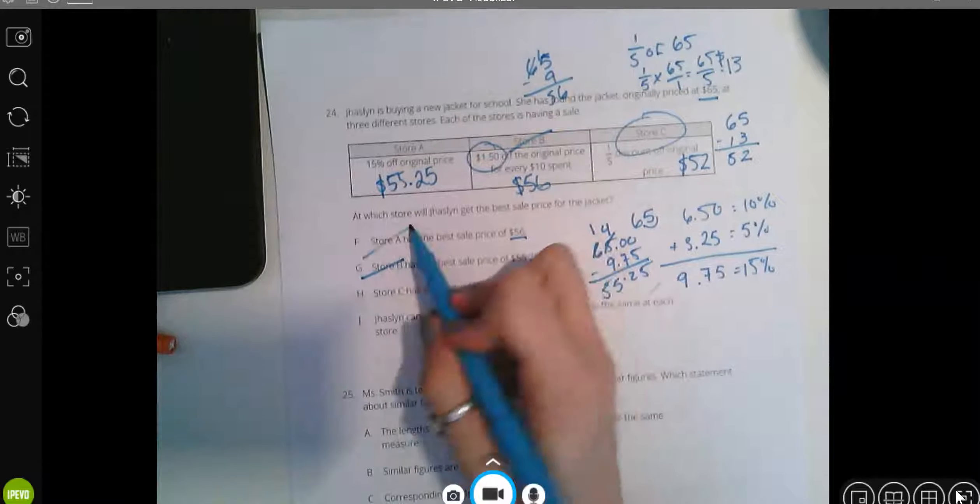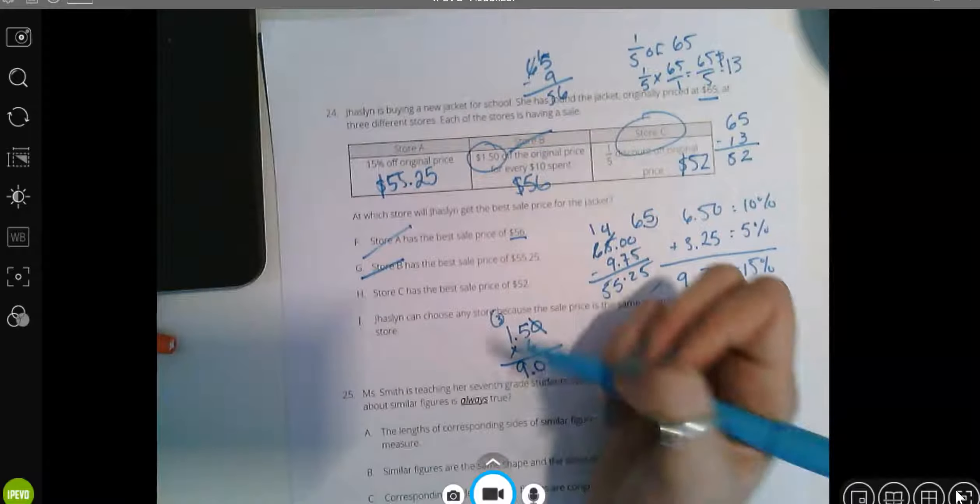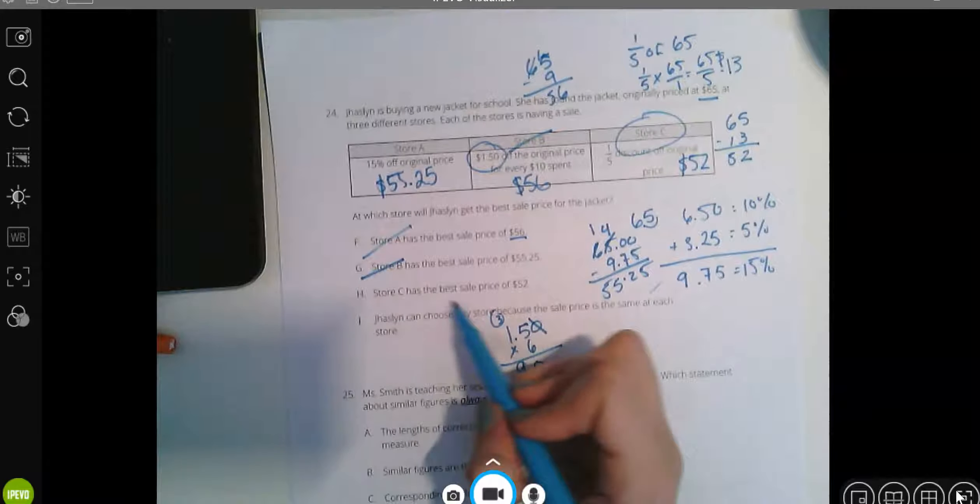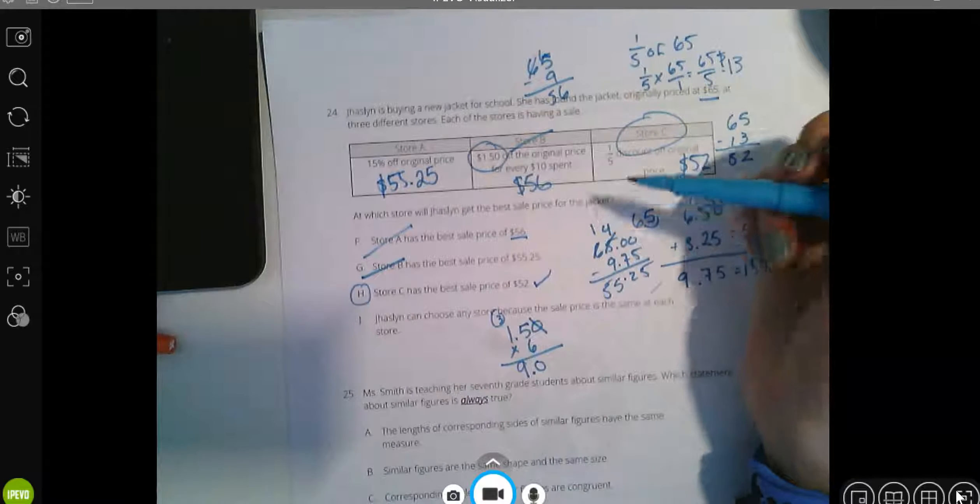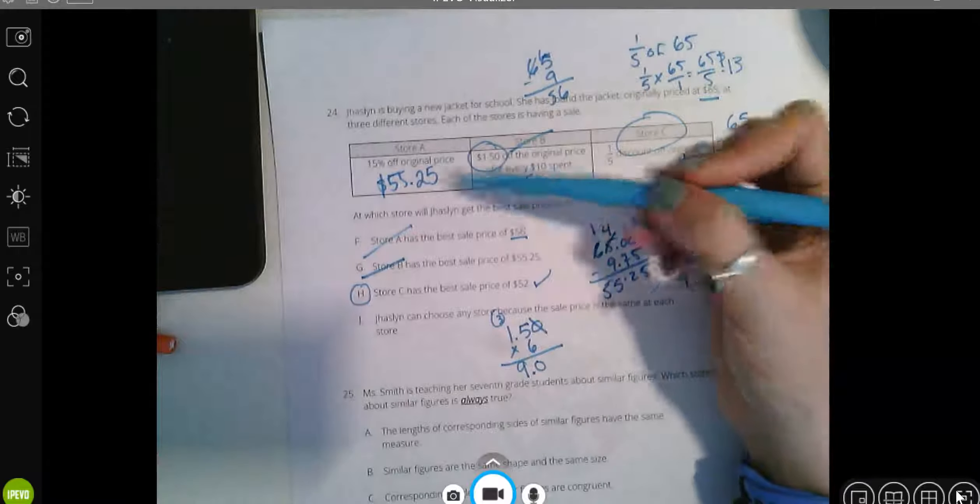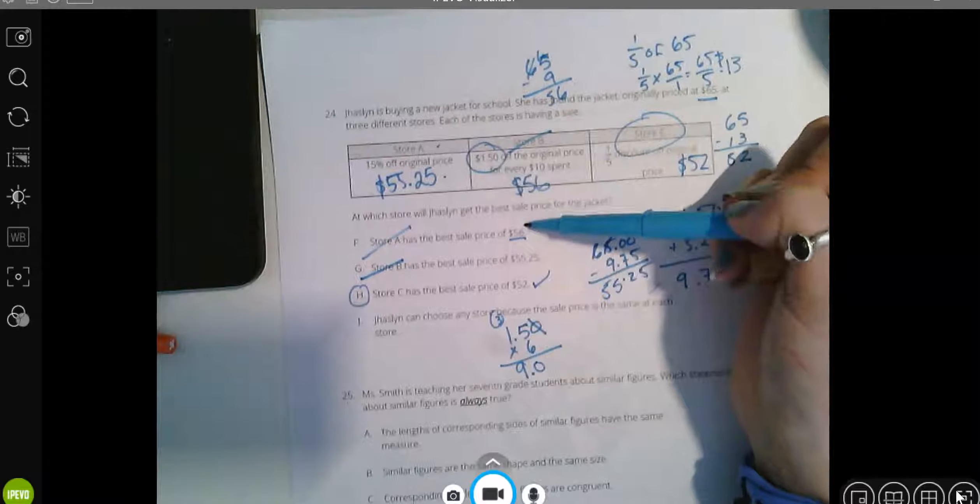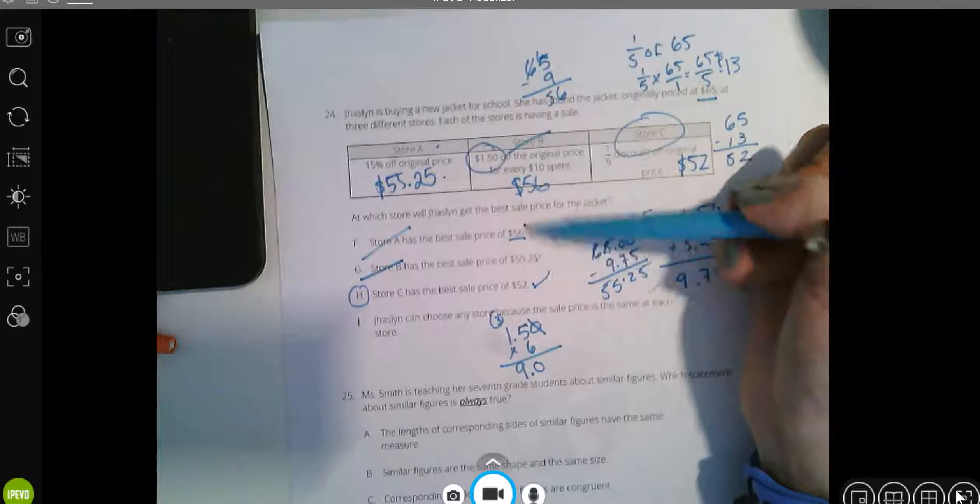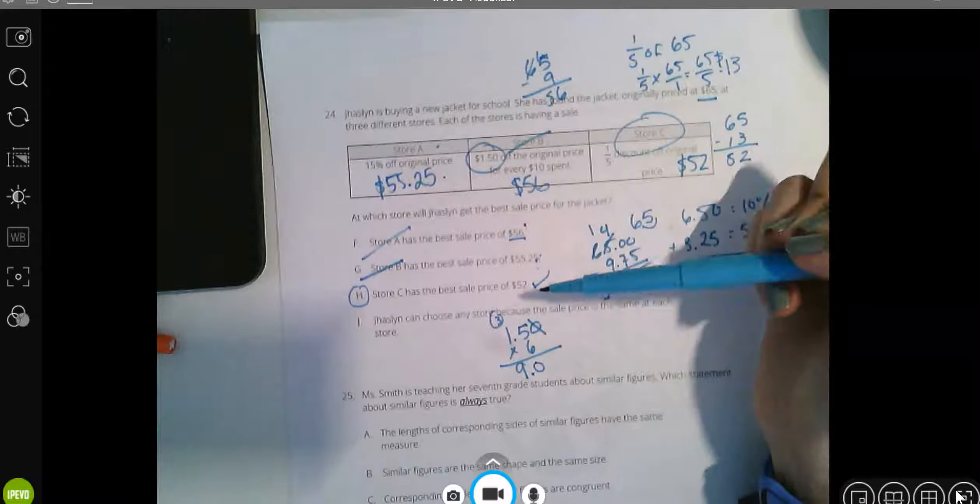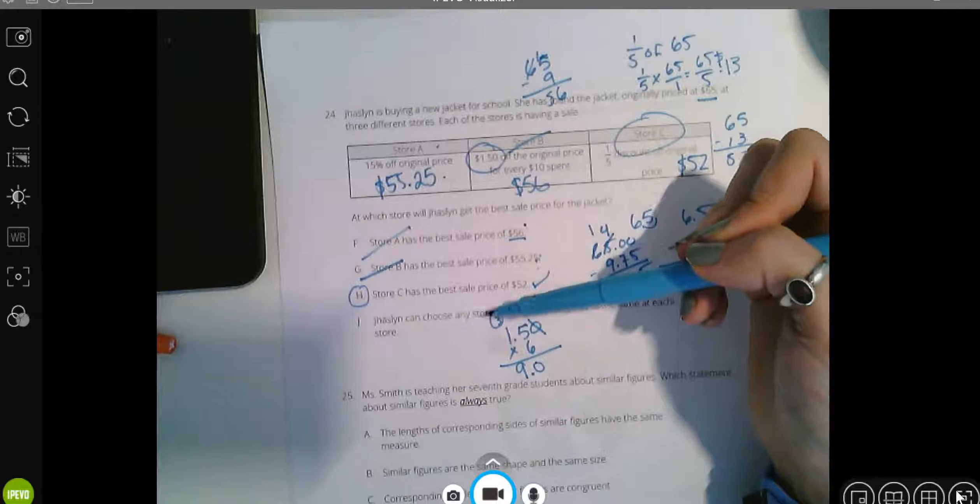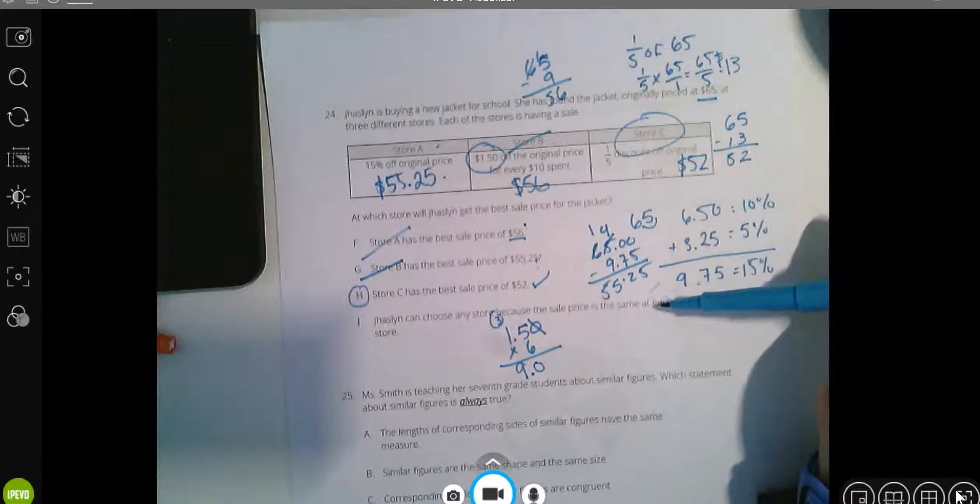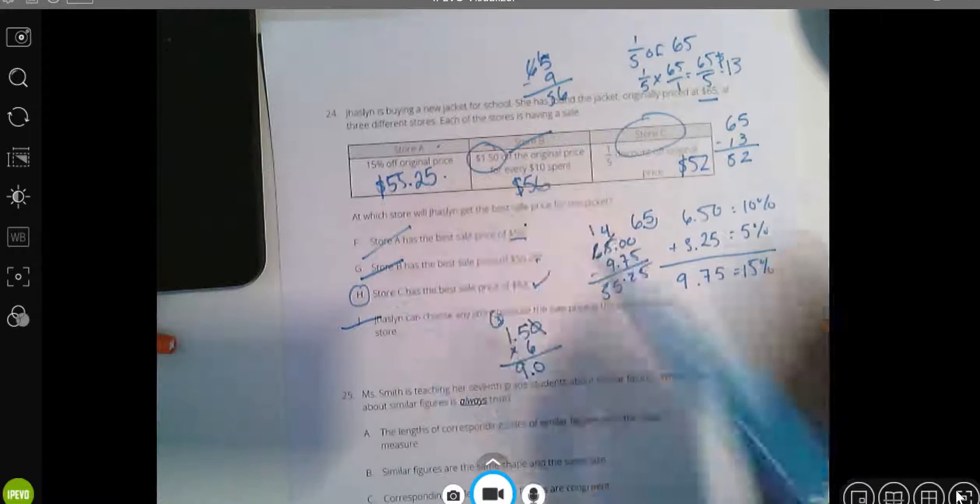Store C is the best price. Store C has the best sale price of $52. That is true. So even if you weren't sure on which one was the best price, if you did your math, you could be like store A. Here they flipped the numbers. Even if they put the correct numbers, they'd still be wrong. And J, the option was, Jasmine can choose any store because the sale price is the same. That's not true. So our answer is H.